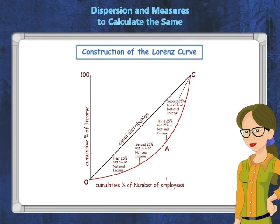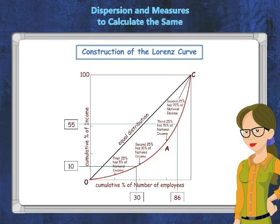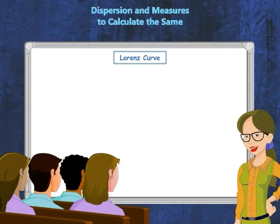The X axis represents the cumulative population, that is, the number of employees (F), and the Y axis represents the cumulative midpoints as percentages. The coordinate (30, 10) shows that 30% of the people earn 55% of the national income, displaying the cumulative share of people from lowest to highest incomes.